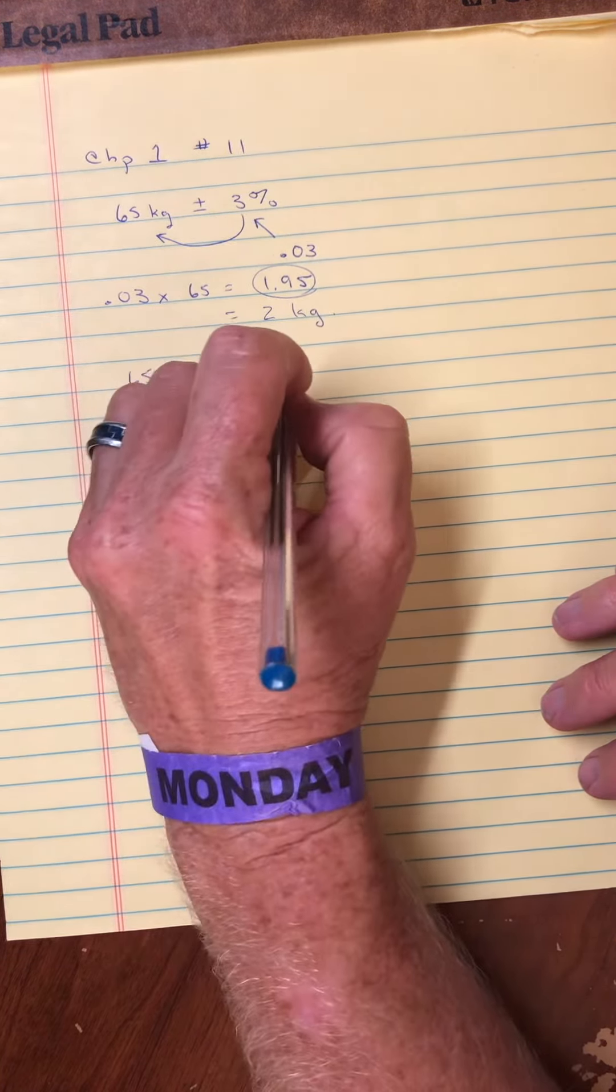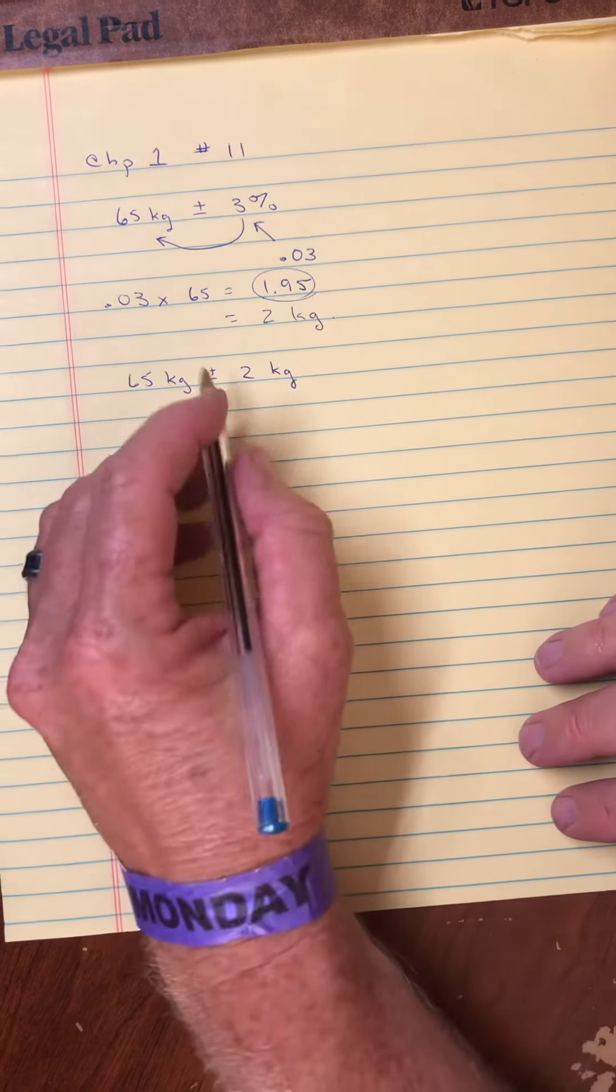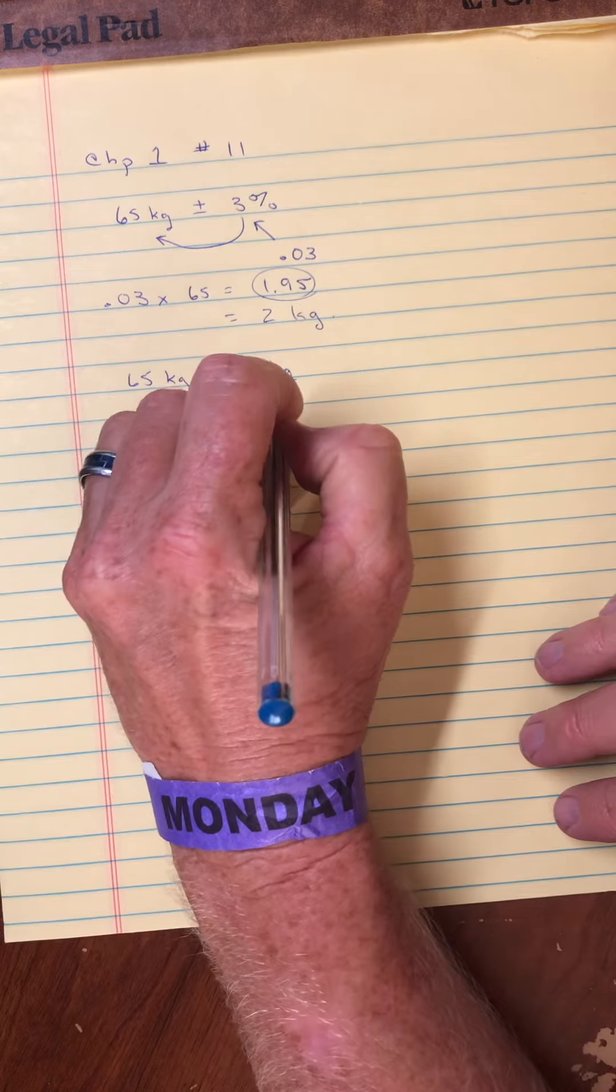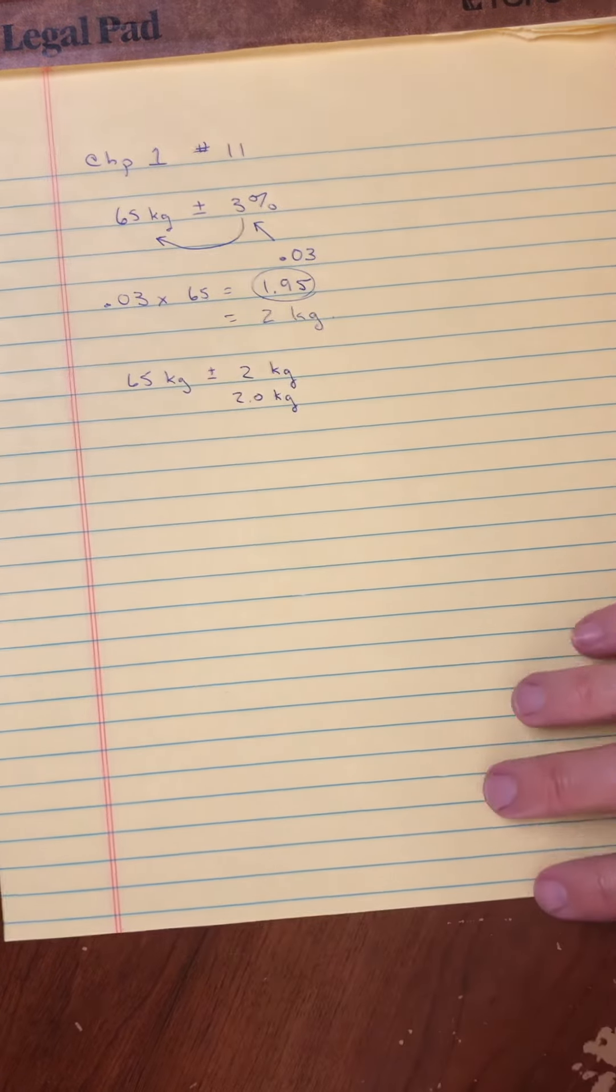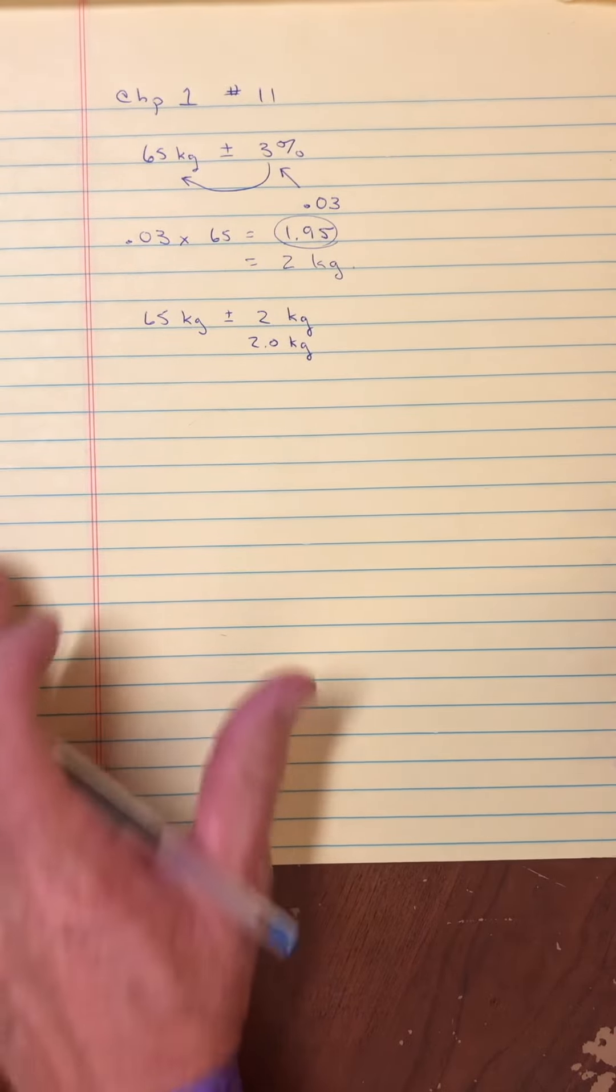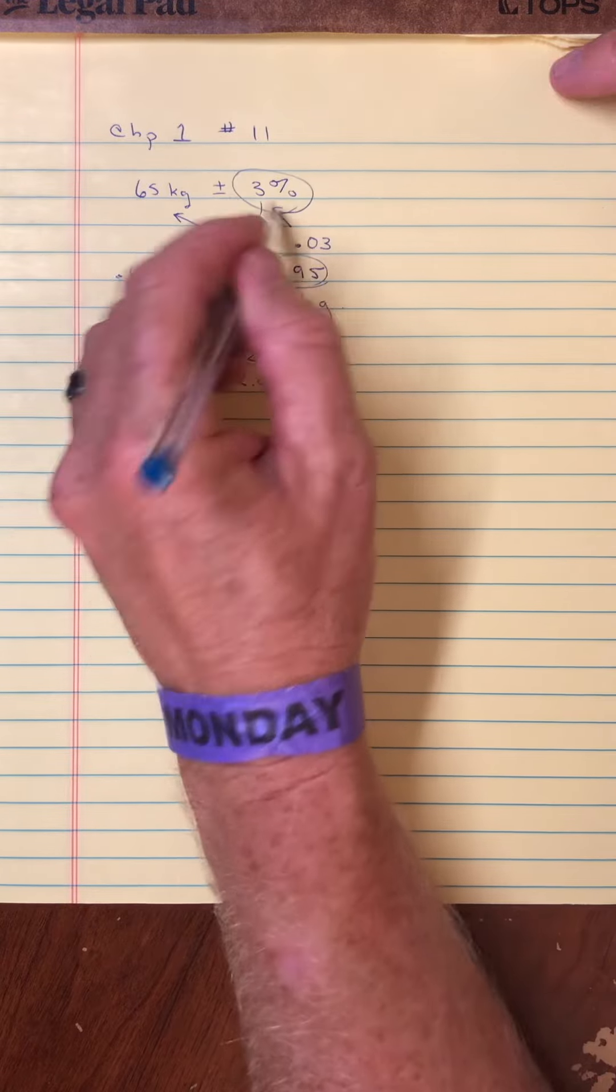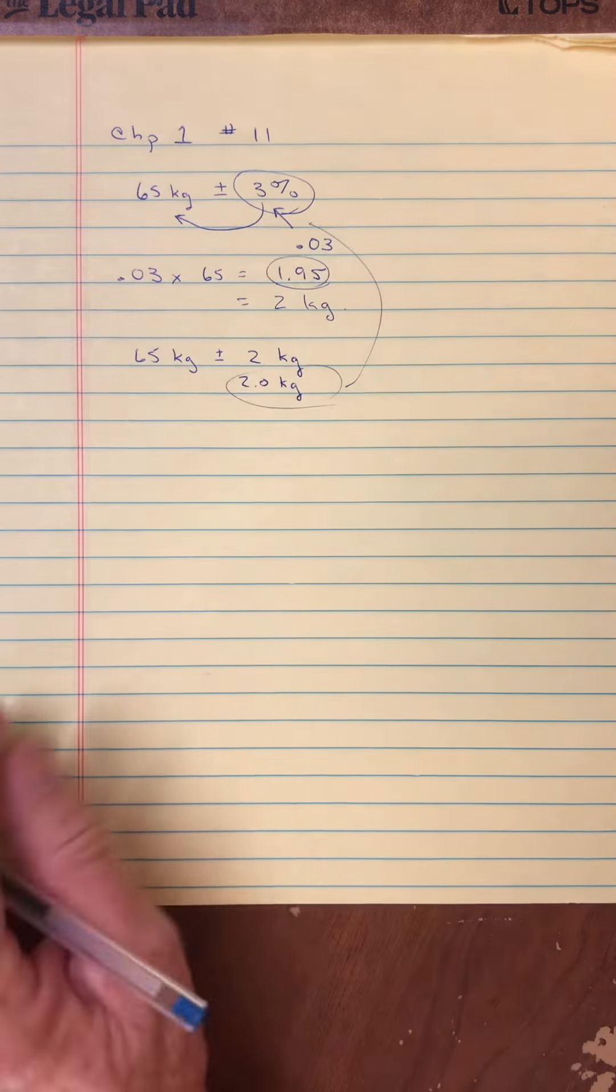I suppose you could go one more and say 1.9. Oh, it would round up anyways. And so maybe 2.0 wouldn't be unreasonable, depending on how strict we're going to be with our significant figures. And we won't be very strict. So we're a little careless here. So that means our answer can be a little careless.